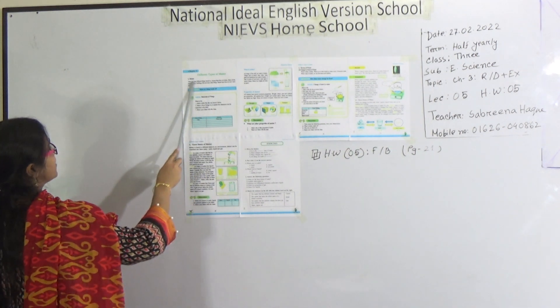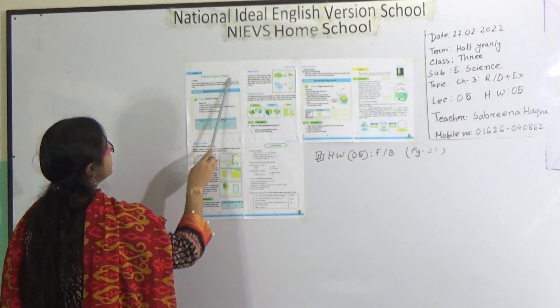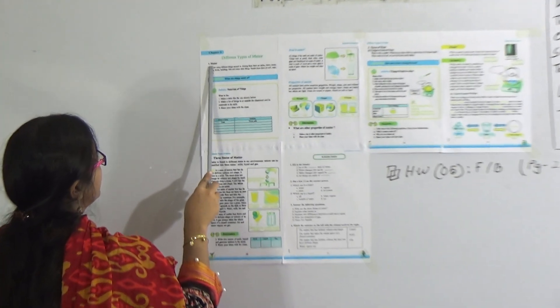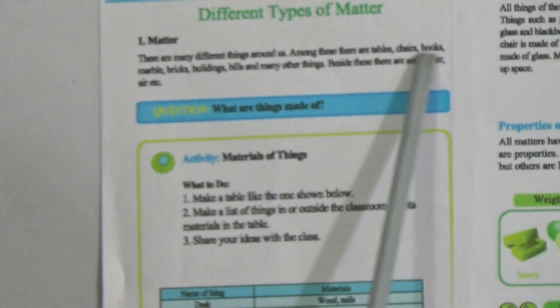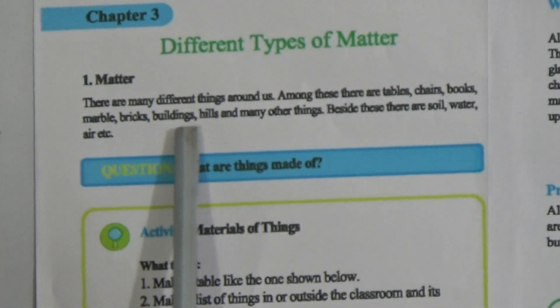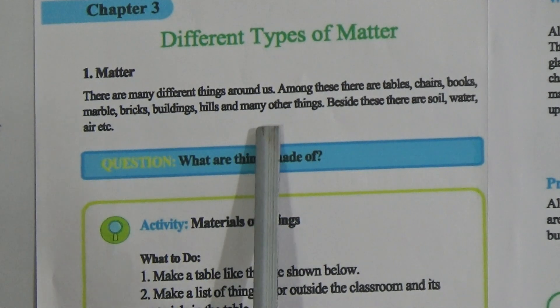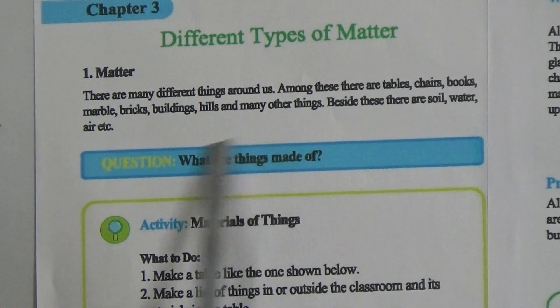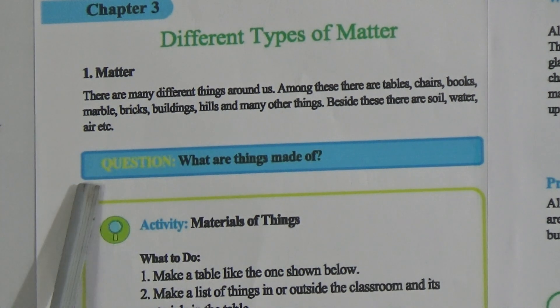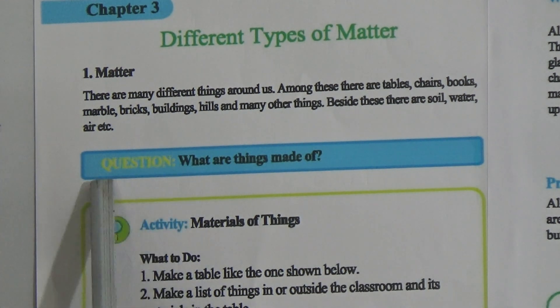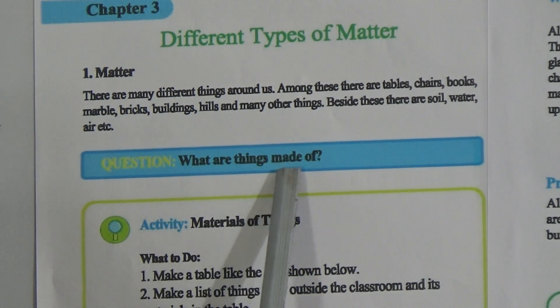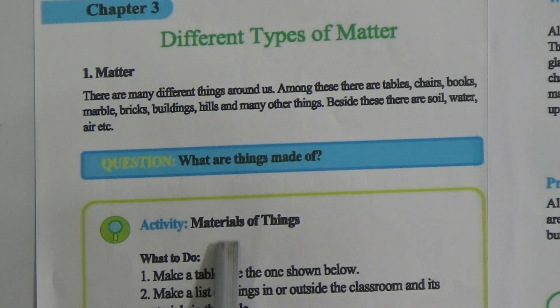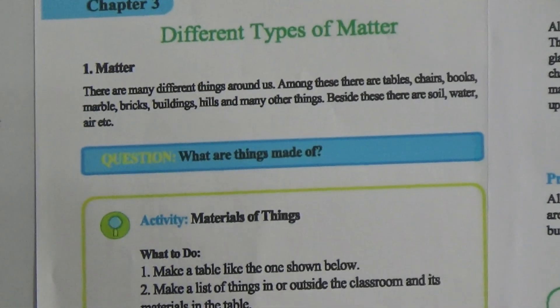The name of the chapter is 'Different Types of Matter.' The first lesson is Matter. There are different things around us — tables, chairs, books, marble, bricks, buildings, hills, and many other things. Besides these, there are soil, water, air, and so on. The question is: what are things made of?